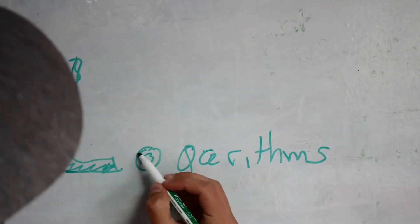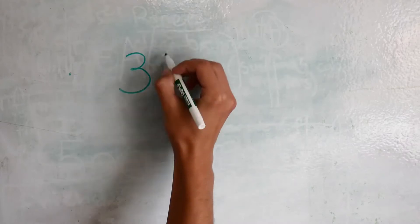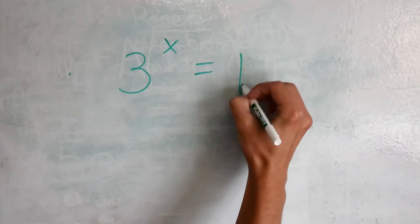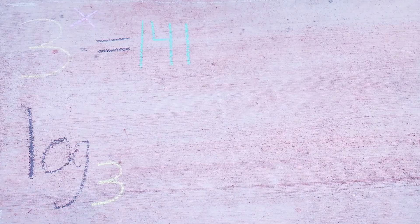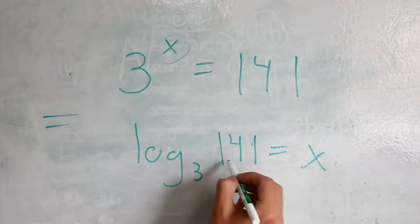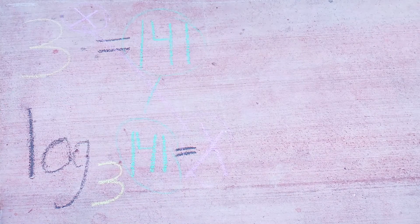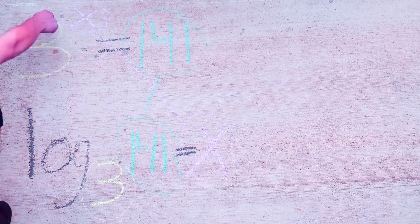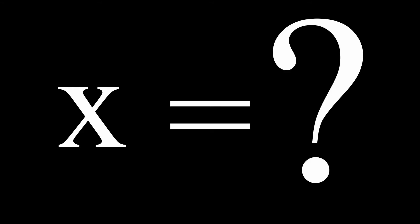A logarithm is not a complicated concept. For example, the exponential equation 3 to the power of x equals 141 is equivalent to the logarithm log base 3 of 141 equals x. You can observe that this logarithm is simply a rephrasing of the original exponential equation with an important difference — the variable exponent is isolated on one side of the equation. Now we can solve for x.